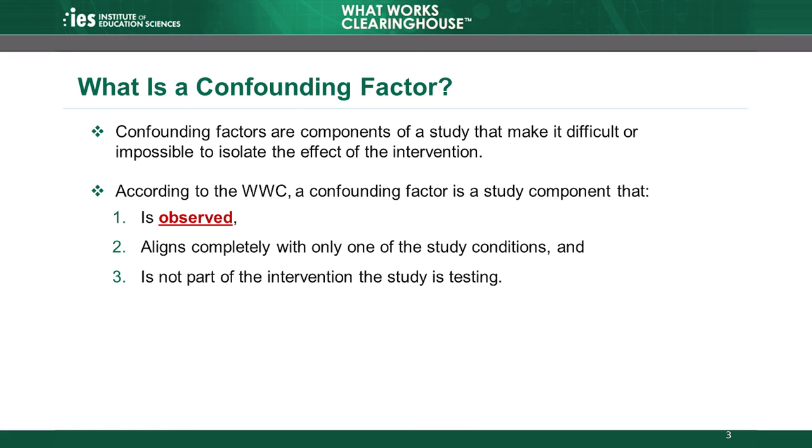The WWC's definition of a confounding factor has three aspects. The first aspect is that confounding factors are observed study components. Examples of observed study components are characteristics of teachers, schools, or lesson materials. For instance, students' use of computers in the intervention group only is an observed component. Typical unobserved components include characteristics of study participants like motivation or teacher qualifications.